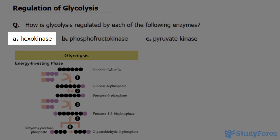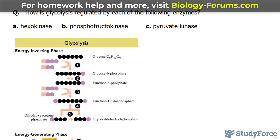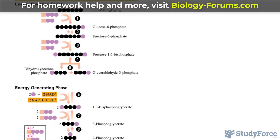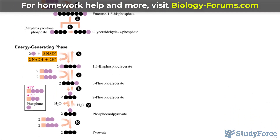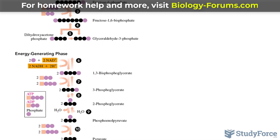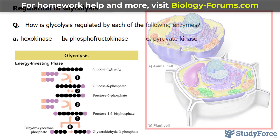Starting with the first, we have hexokinase. It's important to note that glycolysis is a 10-step reaction that produces cellular energy from glucose in the absence of oxygen.